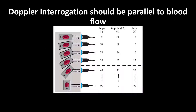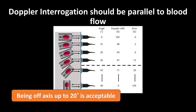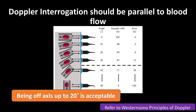Pitfall number one is acquisition errors. In order to obtain the most accurate VTI, you want your Doppler line of interrogation as parallel to the blood flow as possible. Being off-axis up to 20 degrees is acceptable, but anything beyond that, you will actually underestimate your VTI and it's no longer reliable. There's some physics involved here which we're not going to get into today — if you're interested, please check out Western Sono's Principles of Doppler video.